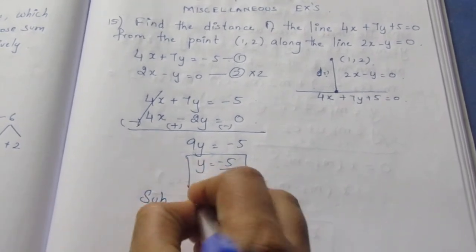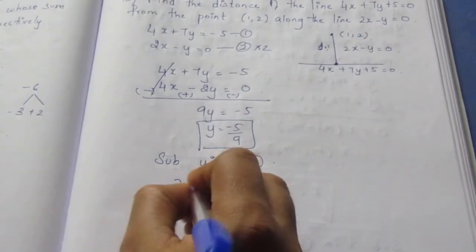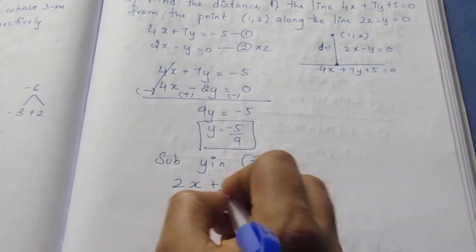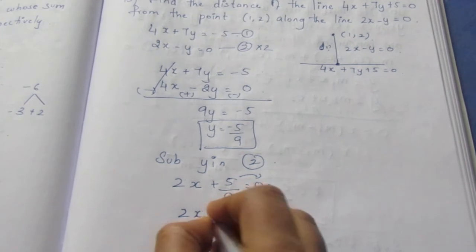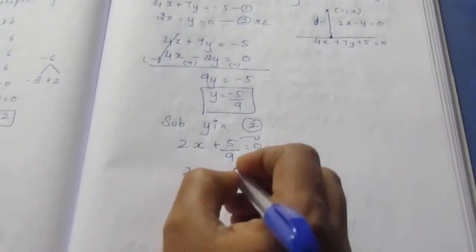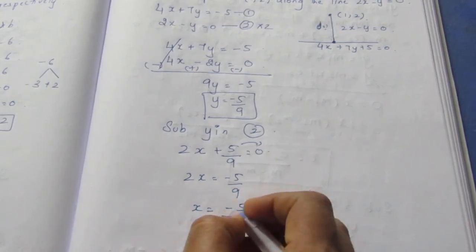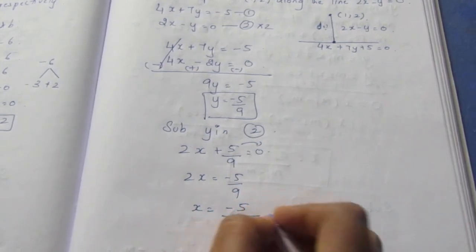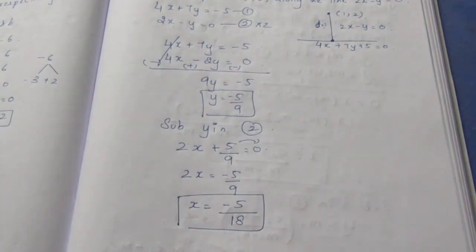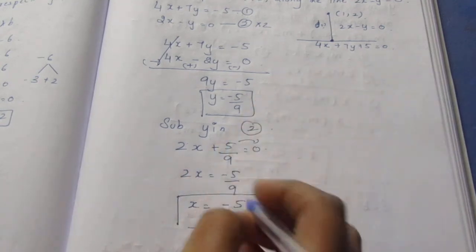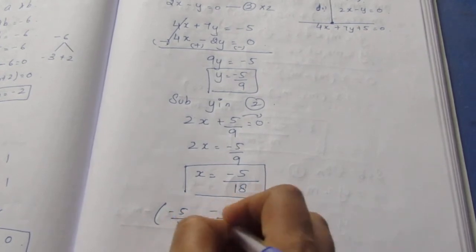Substitute in any of the equation to find x. So substituting y in equation 2, I get 2x minus of minus will become plus 5 by 9 equals 0. Bringing this whole term to the side it becomes 2x equals minus 5 by 9. 2 will come down in divide. So it becomes minus 5 by 18. So your x value is minus 5 by 18 and your y value is minus 5 by 9. So we have got the points of x and y, that is minus 5 by 18 comma minus 5 by 9.